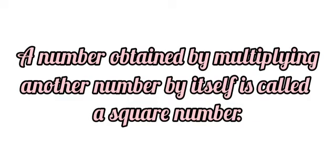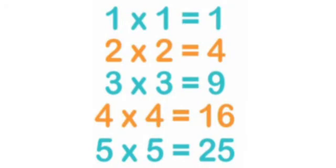Now, how do we define a square number? A number obtained by multiplying another number by itself is called a square number. For example: 1×1=1, 2×2=4, 3×3=9, 4×4=16, 5×5=25, and so on — all are square numbers.